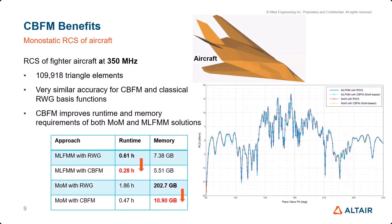This is another example with a smaller model, where RCS is computed using both the Method of Moments and the MLFM solver. Looking at the comparison table, we again see that the CBFM approach takes much less memory and time compared to regular Method of Moments or MLFM. Especially with Method of Moments, we see almost a 20-fold reduction in memory — it came down from more than 200 GB to around 10 GB. That's a huge savings in memory.